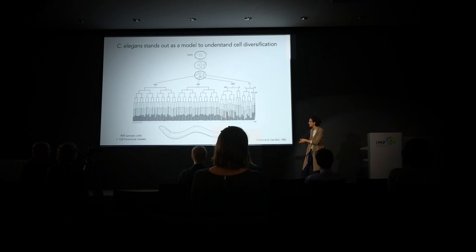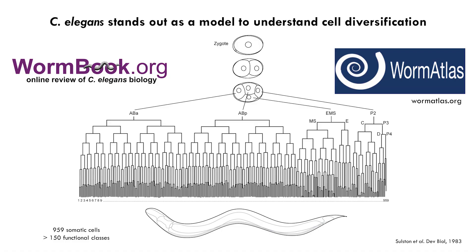To experimentally address questions about cell diversification, we use a model organism, which is a nematode worm called C. elegans. We use this animal for a number of reasons, and I'll highlight two of them. First of all, in the adult stage, this animal has only 959 somatic cells. However, within that very small number of cells, it contains a very large cell type diversity — many different neuron types, different muscle cells, different epidermal cells, and so on. We think this worm strikes a perfect balance between complexity and simplicity that allows us to understand how different cell types are made during development.